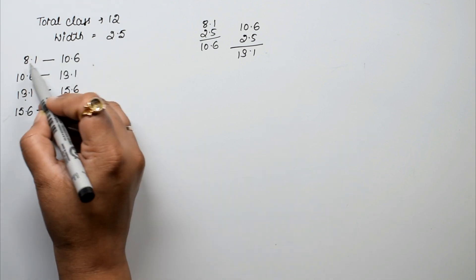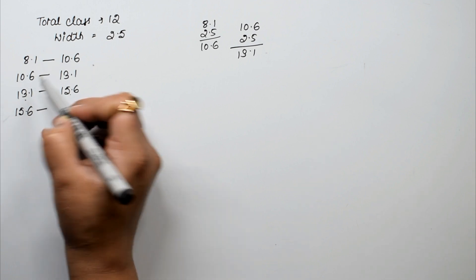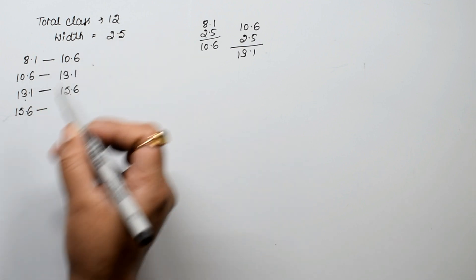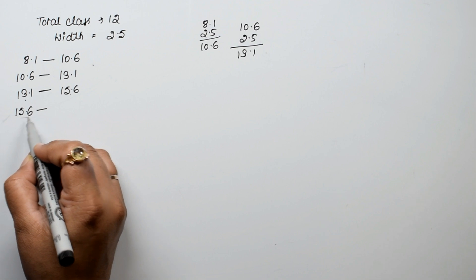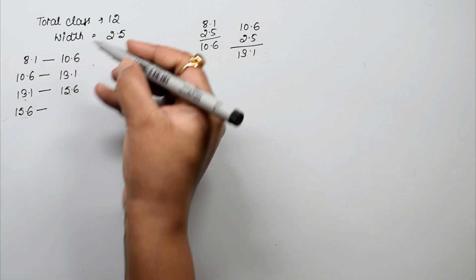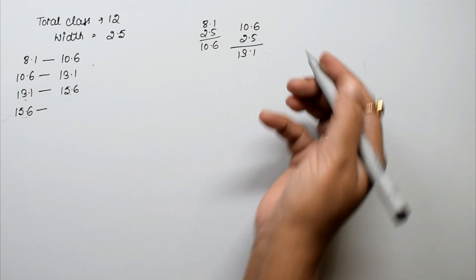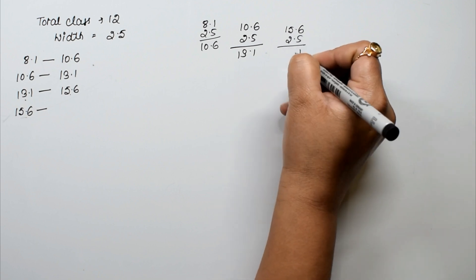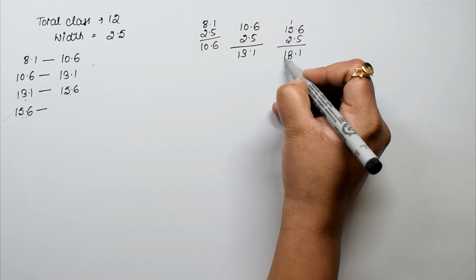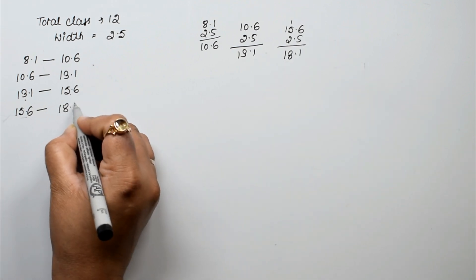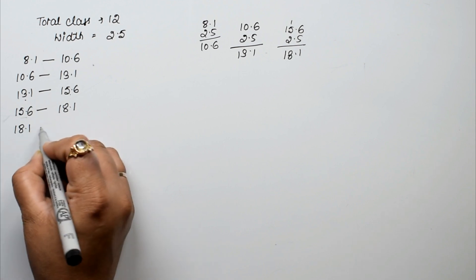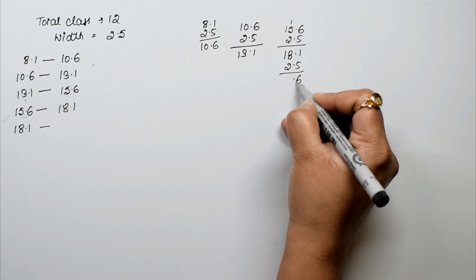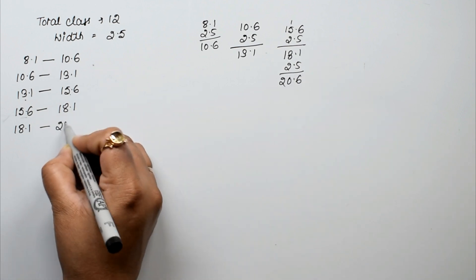Continuing to add 2.5 each time to build the upper class limits. After 15.6, add 2.5 to get 18.1. Then 18.1 + 2.5 = 20.6. So 20.6 is the boundary for the 5th class.